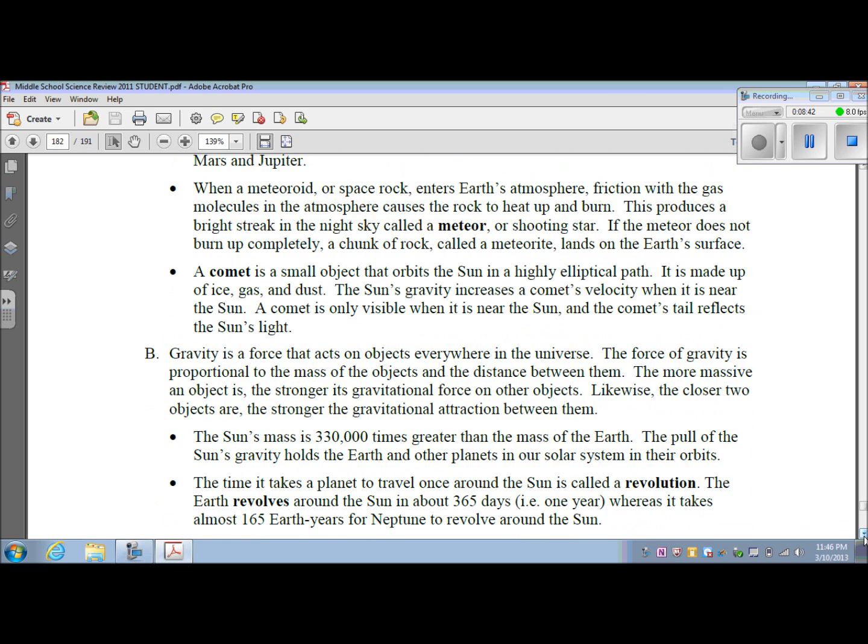When a meteoroid or space rock enters Earth's atmosphere, friction with the gas molecules in the atmosphere cause the rock to heat up and burn. This produces a bright streak in the night sky called a meteor or shooting star. If the meteor does not burn up completely, a chunk of rock called a meteorite lands on Earth's surface.